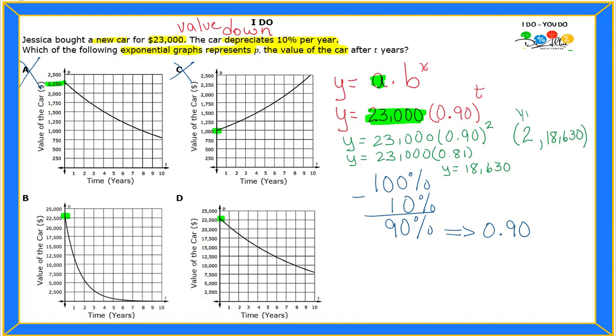Remember, this is the years, and this is the value of the car after that many years. I am going to look for that ordered pair. I'm looking for 2. I'm going to check on B and D. This is 2, and I'm looking for around 18,000, somewhere around here. Is that point on the curve, on my exponential graph? No, it's not. So B cannot be my answer.